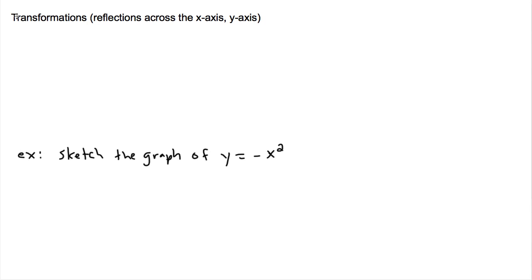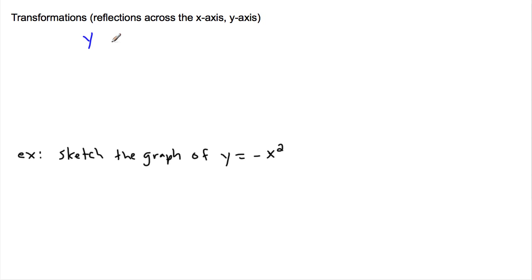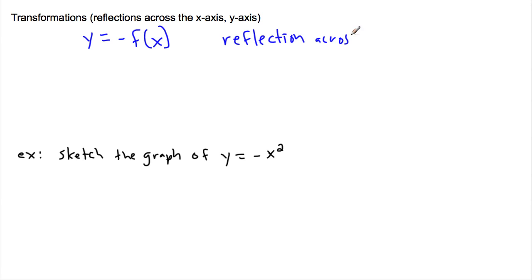So we can have not only stretches and compressions in horizontal and vertical, or translations where we move things left and right, but we can also reflect across the x or the y axis. That's the last type of transformations I'm going to talk to you about. If we throw a negative in front — like y equals negative f of x — that means a reflection across the x-axis.